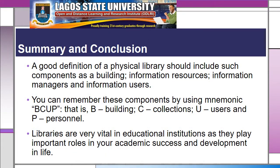By way of summary and conclusion, a good definition of a physical library should include such components as a building, information resources, information managers, and information users. If you know the mnemonic BCUP, it will help you to remember all these components: B for building, C for collections, U for users, and P for personnel. Always remember that libraries are very vital in educational institutions as they play important roles in your academic success and development in life.